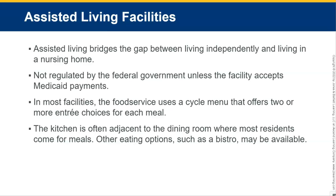Assisted living facilities bridge the gap between living independently and living in a nursing home. They are not regulated by the federal government unless the facility accepts Medicaid payments. In most facilities, the food service uses a cycle menu that offers two or more entrées for each meal. The kitchen is often adjacent to the dining room where most residents come for meals, and other eating options like a bistro may also be available.